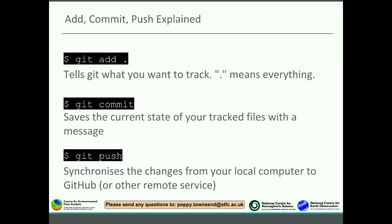What's the difference between git add, git commit, and git push? Git add tells Git what you want it to track — until you've done git add, it's not watching those files. The dot means everything. Git commit is essentially a save — it saves the current state of tracked files with a message on your local computer. Git push synchronises the changes from your local computer to GitHub or whatever other remote service you're using.